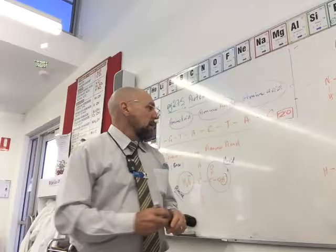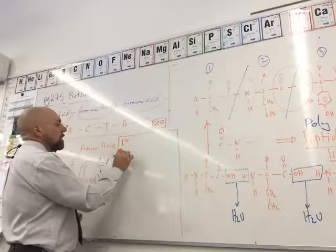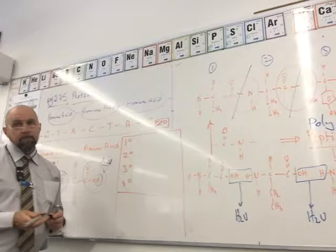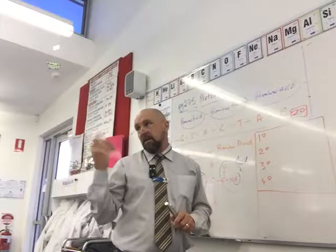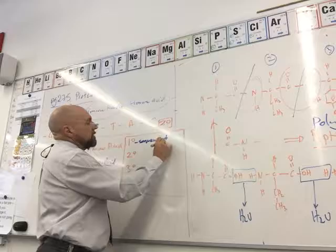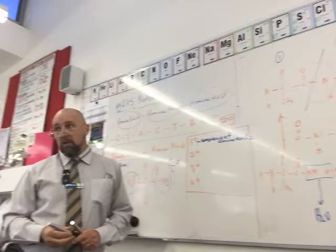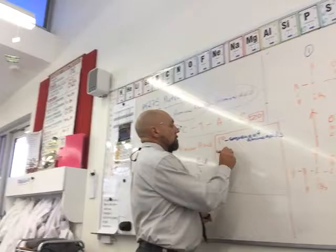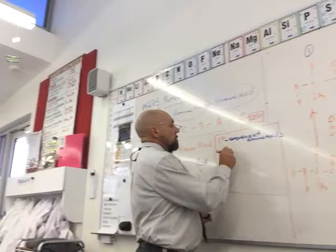I'm going to briefly touch on what we call the structures of a protein molecule, because we've got a video that will explain it well. We have four levels: primary, secondary, tertiary, and quaternary structure. The primary structure is simply the sequence of the amino acids — that's how we define it.